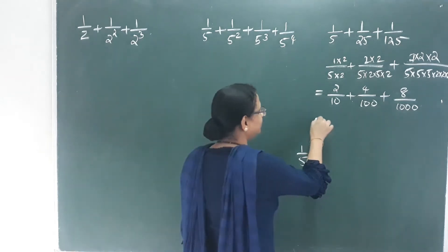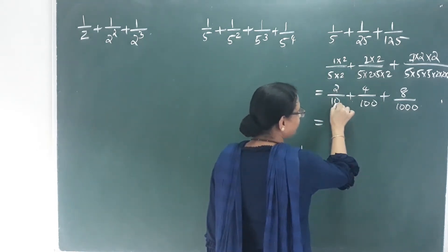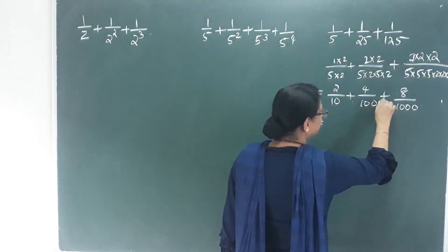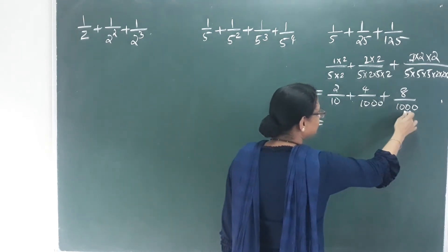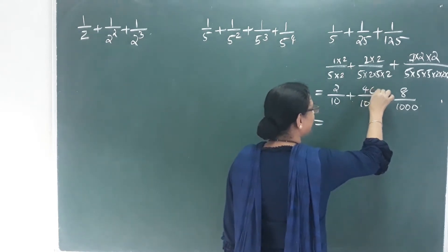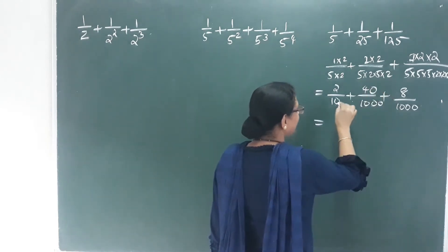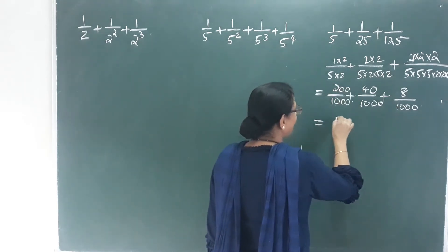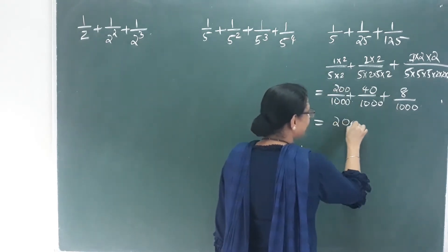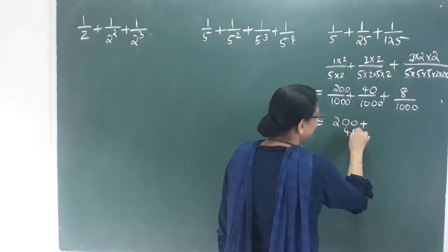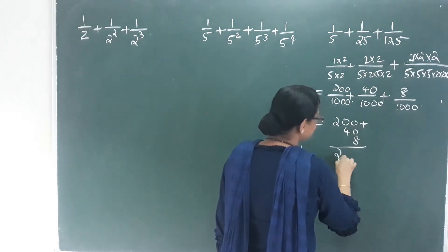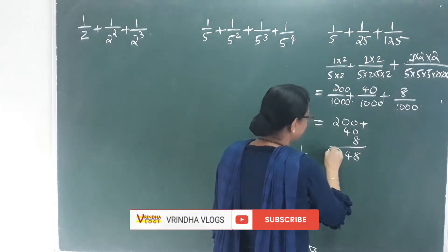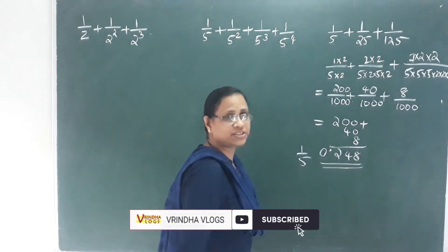This is the decimal form. The denominator is 1000. How do we get it here? We have 200 plus 40 plus 8. That means 2, 4, 8 — three decimal places. The decimal form is 0.248.